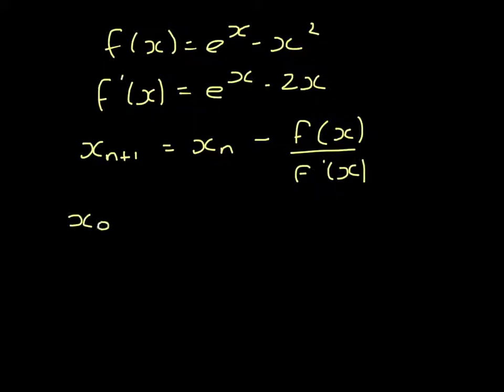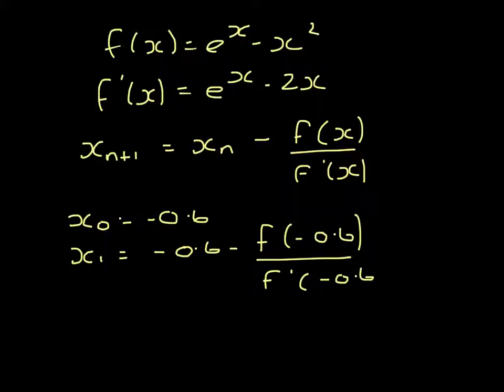If x_0 is negative 0.6, the next one would be negative 0.6 minus f of negative 0.6 divided by f dash of negative 0.6, which gives negative 0.7079.